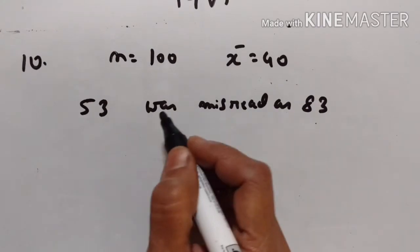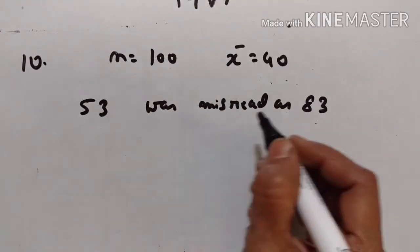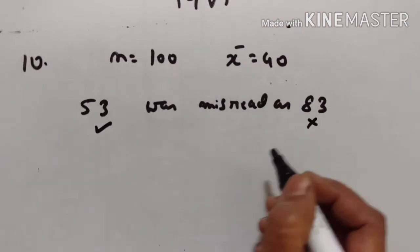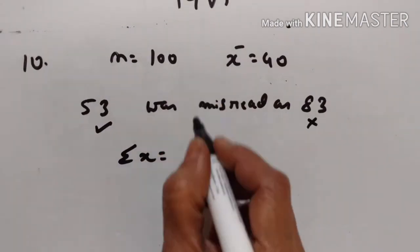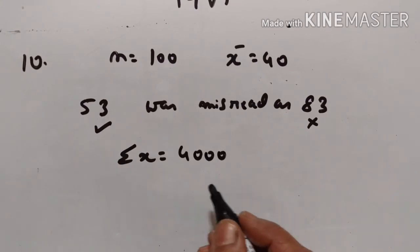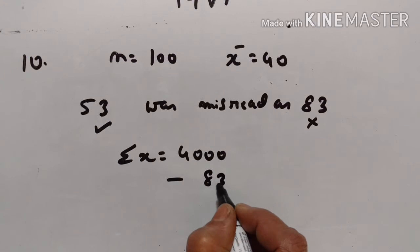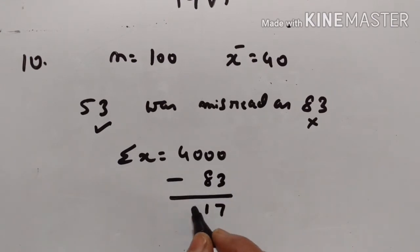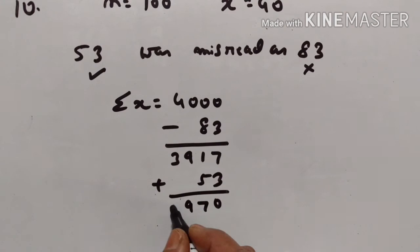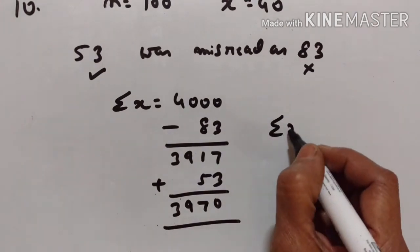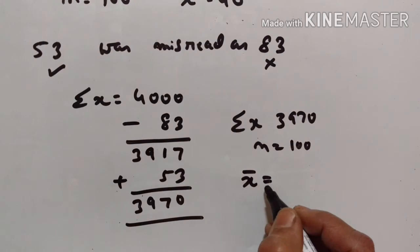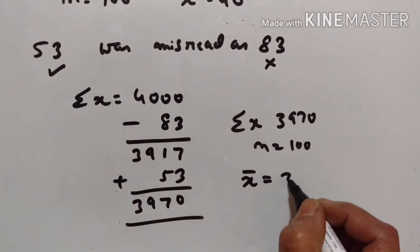10th problem: the mean of 100 observations is 40 — n equals 100. It is found that an observation 53 was misread as 83. Find the correct mean. The sum is equal to 40 times 100, that is 4000. Subtract the wrong value and add the correct one. The new sum is equal to 3970. Therefore the correct mean is 3970 divided by 100, that is 39.7.